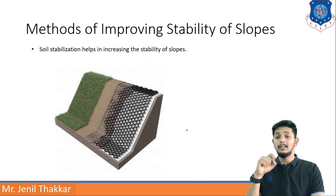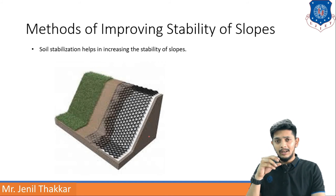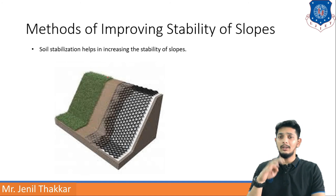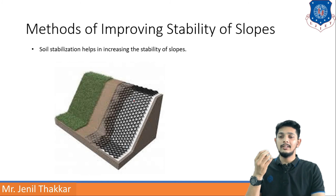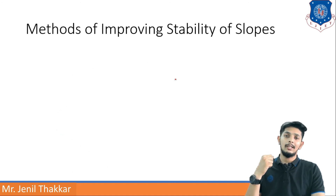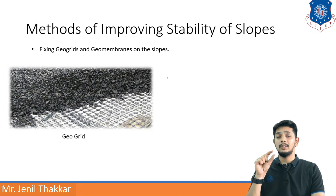Soil stabilization helps in increasing the stability of slopes. If a net is placed along the slope and soil is compacted over it, it becomes more stable. As shown in the image, before stabilization there is a wide loose layer, but after adding stabilizing materials a stable, compacted slope is achieved.